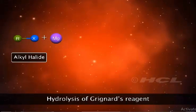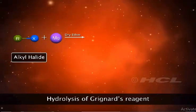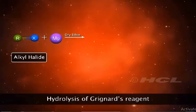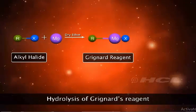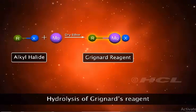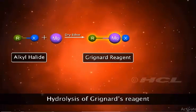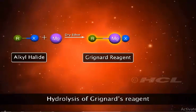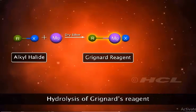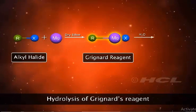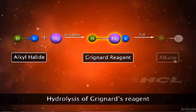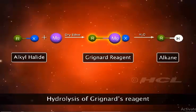Alkyl halides react with magnesium in the presence of dry diethyl ether to form alkyl magnesium halides, or Grignard's reagents. These compounds have a polar carbon-magnesium bond, owing to which they react readily with compounds having active hydrogens such as water, acids, alcohols, ammonia, amines, etc., to form alkanes.